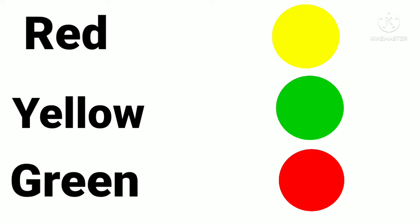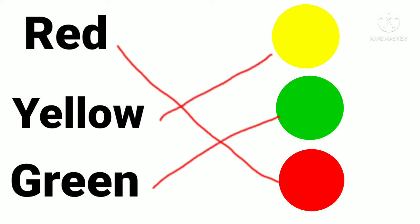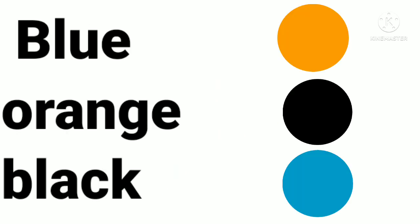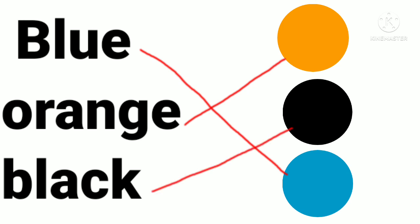Red, yellow, green — we will now match with drawing a line. Where is red color? Red color. Yellow color. Green color. Now blue, orange, and black colors are given. Where is blue color? Yes, blue color. Where is orange color? Yes, it is orange color. Where is black color? Yes, it is black color.